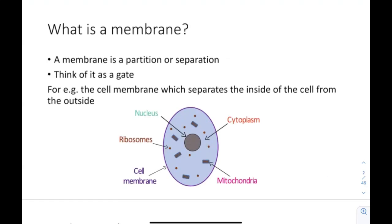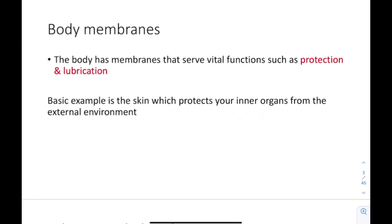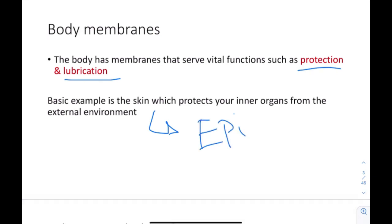Let's begin. What is a membrane? A membrane is a partition or separation — basically a gate. For example, here we have a cell; this is the cell membrane, separating the external environment from the internal environment. When we talk about body membranes, the body has membranes that serve vital functions, for example protection and lubrication — lubrication means it lessens friction to prevent damage. A basic example of a body membrane is the skin, and it's an epithelial membrane.